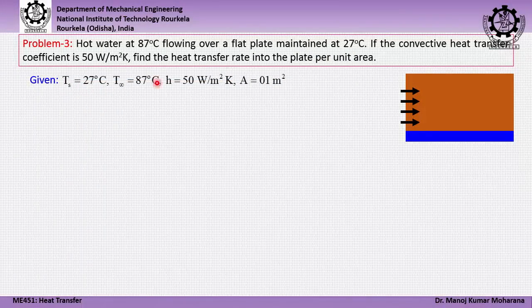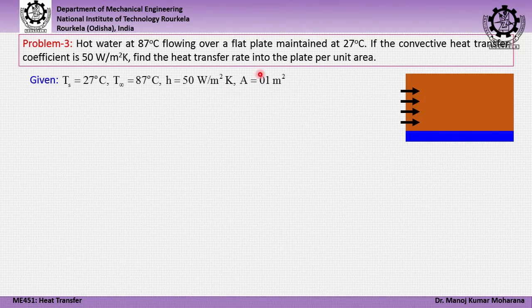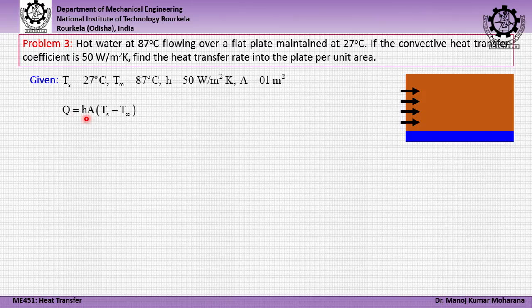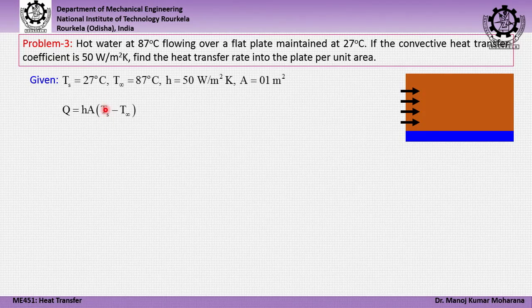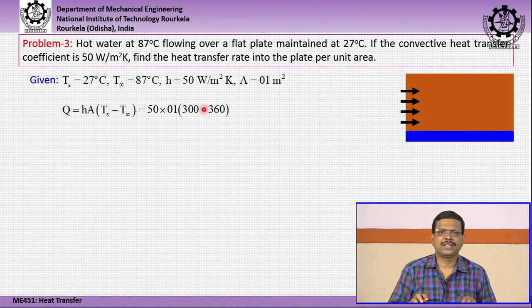Given: surface temperature Ts = 27°C, ambient temperature T∞ = 87°C, and h = 50 W/m²·K. Considering area A = 1 m² (since we want heat transfer per unit area), we apply Q = h·A·ΔT, where ΔT is the difference between the solid wall surface temperature and the ambient fluid temperature.